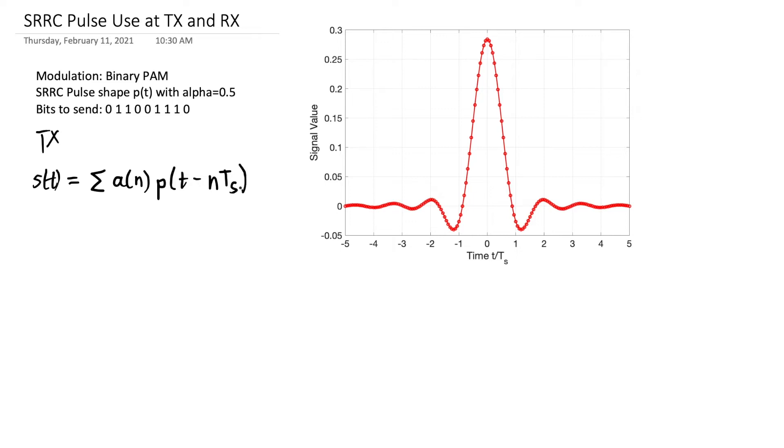And the pulse shape is going to be delayed by an integer number of symbol periods. The symbol period expresses how long it takes to send one bit and how soon after that first bit we send the next one. In this case, the pulse shape is this square root raised cosine pulse shape, but before we've used rectangular pulse shapes.